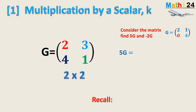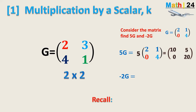Let us start by looking for 5G. Here the scalar quantity is 5, so we are going to multiply each of the entries by 5. So 5 times G gives us: 5 times 2 is 10, 5 times 4 is 20, 5 times 0 is 0, and 5 times 1 is 5. So 5G is equal to the matrix: 10, 5, 0, 20.